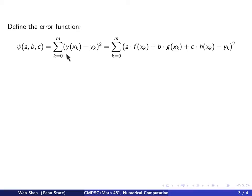So write out in detail, because we have the y here. y will be a·f(x_k) plus b·g(x_k) plus c·h(x_k) minus y_k squared.